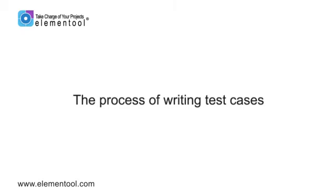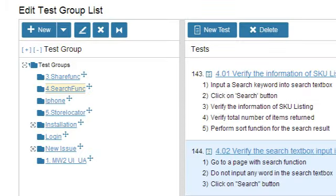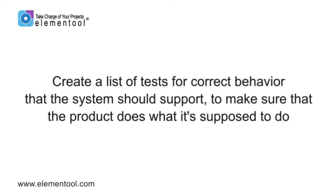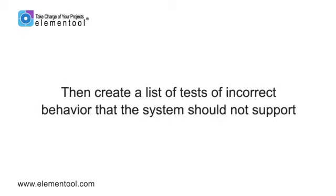The process of writing test cases is as follows. You start by creating a test list tree and defining the different features for each requirement. Then you break down each feature into a list of tests. When you're doing this, you want to think about all the ways that people might use each feature and then look for places where it could potentially fail. You create a list of tests for correct behavior that the system should support, and then a list of tests for incorrect behavior that the system should not support, to make sure the system can handle events that don't follow its business rules.